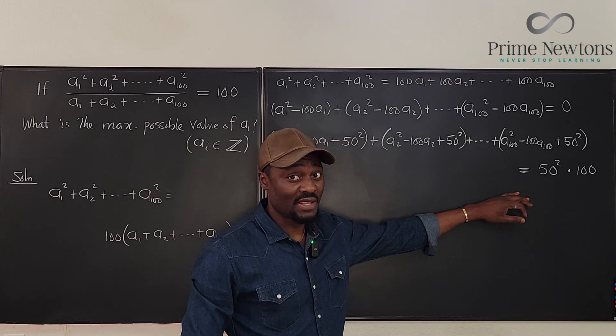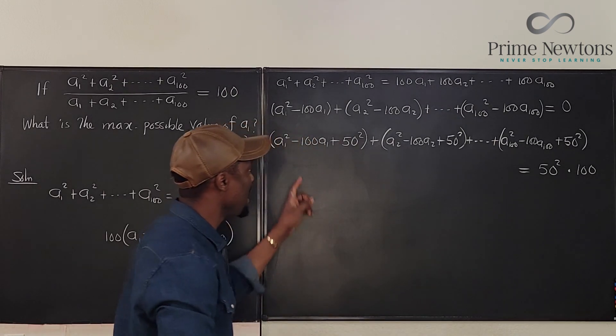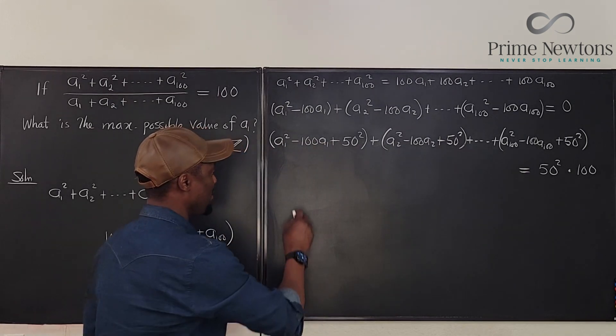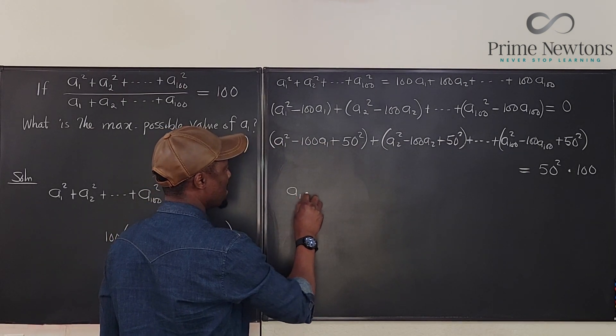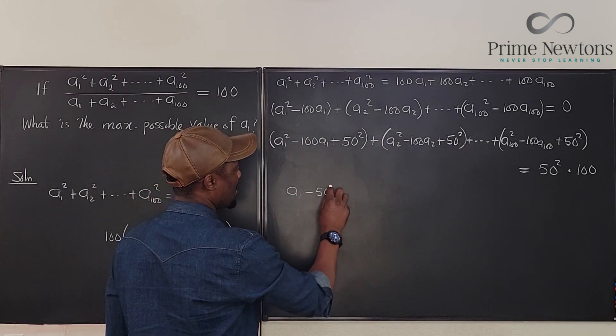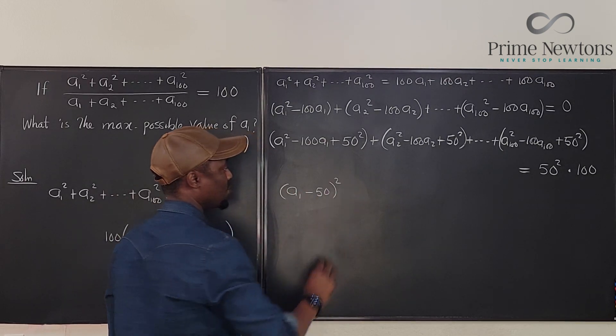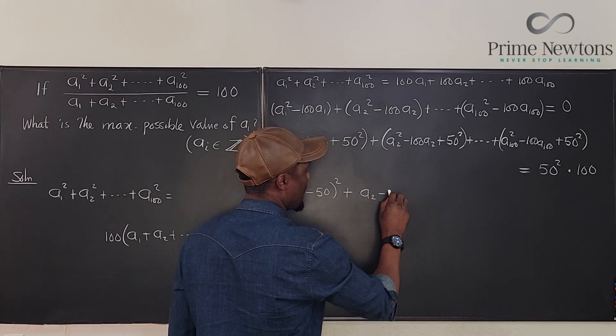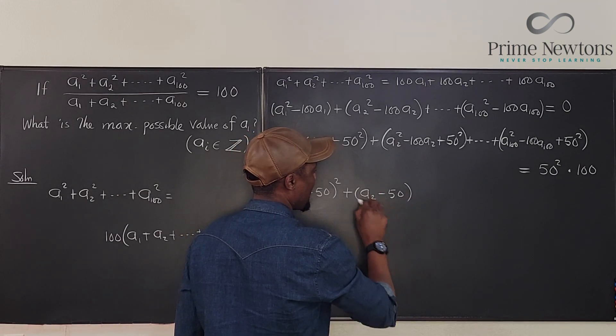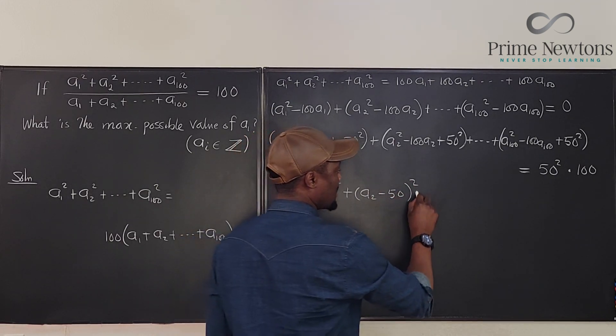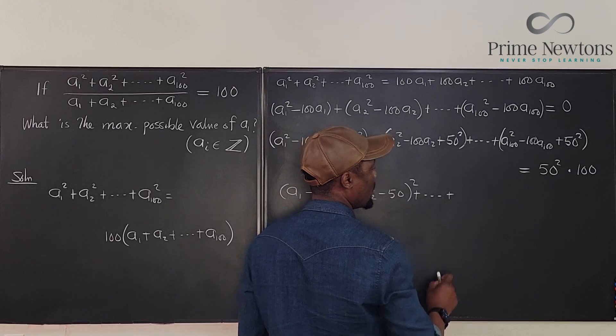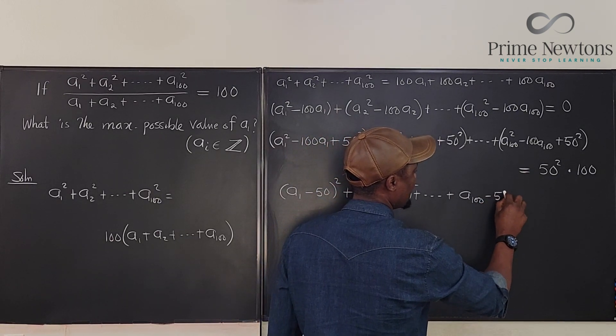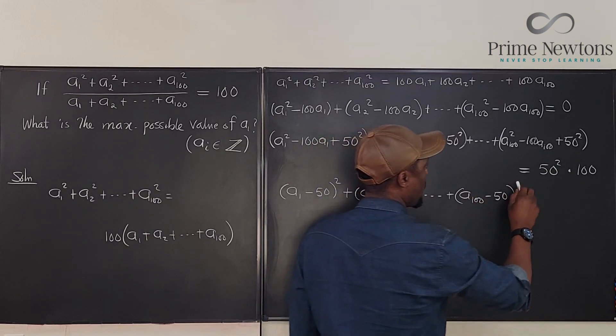I had to rewrite it because things were getting really tight. But now that you've seen that we've made this a perfect square because we can rewrite this as just A1 minus 50 squared. And we can rewrite this as A2 minus 50 squared plus all the way to A100 minus 50 all squared.